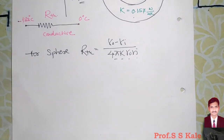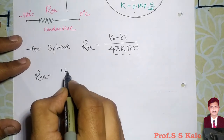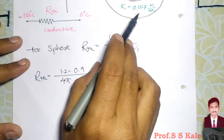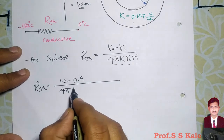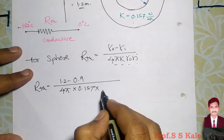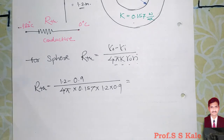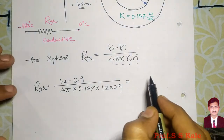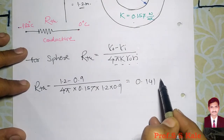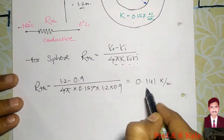Putting all values into the formula: Rth = (1.2 − 0.9) / (4π × 0.157 × 1.2 × 0.9). The resistance comes to 0.141 kelvin per watt. That is our thermal resistance Rth.